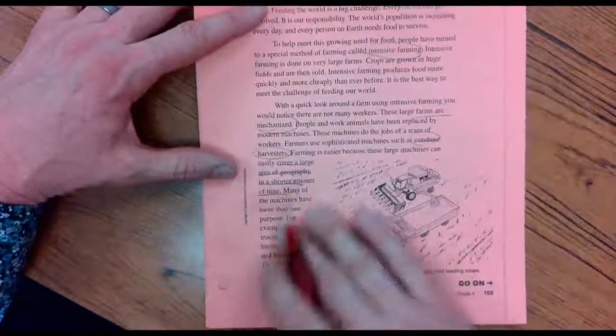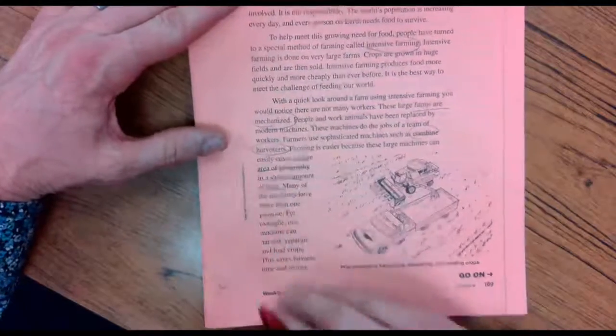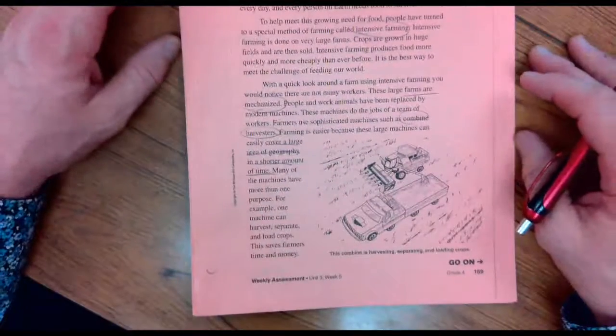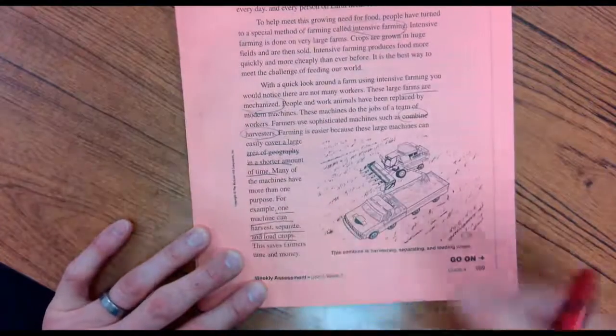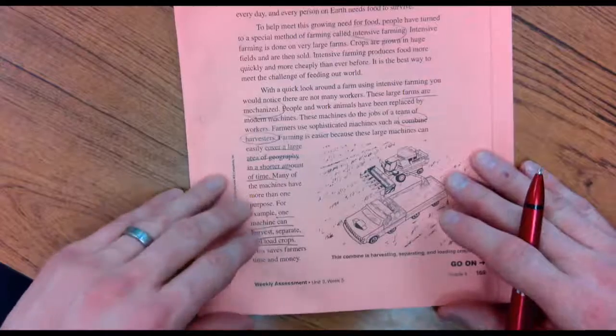Many of the machines have more than one purpose. For example, one machine can harvest, separate, and load corn. What a machine. This saves the farmers time and money.